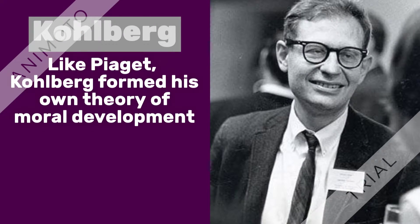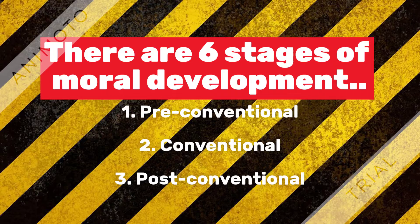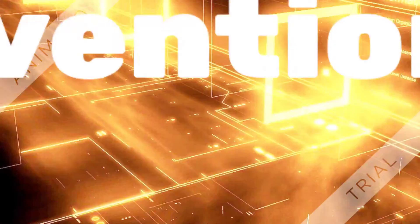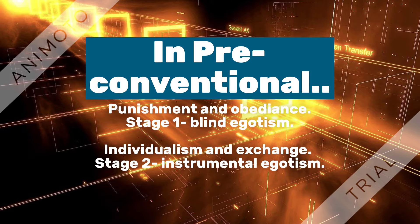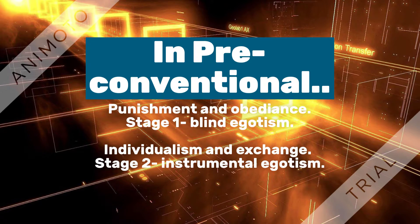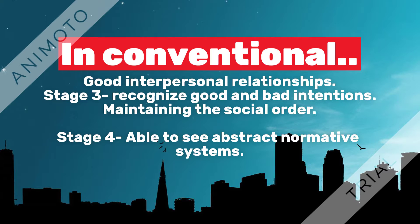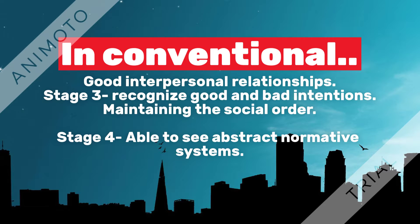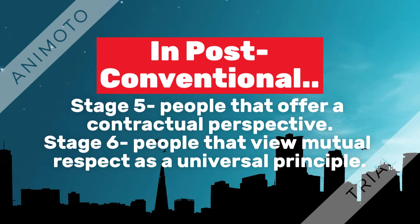Like Piaget, Kohlberg too developed his own theory of moral development. There are six stages of Kohlberg's moral development classified into three groups: the pre-conventional, the conventional, and the post-conventional. In each classification there are two stages. In the pre-conventional stage we see stages one and two, each dealing with punishment, obedience, individualism, and exchange respectively. Stage one shows a social perspective of blind egotism, while stage two shows instrumental egotism. Stages three and four fit under the conventional heading, showing people to have good interpersonal relationships and respect for social order. People recognise good and bad intentions and uphold the law with their actions and judgments. The post-conventional group consists of stages five and six, where people share mutual respect as a universal principle and carry out actions from the perspective of others, as if they encountered a scenario in another person's shoes.